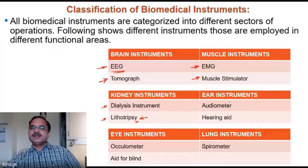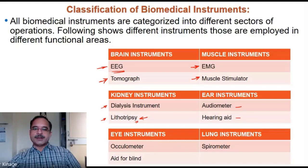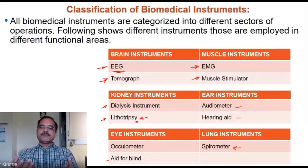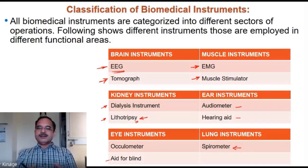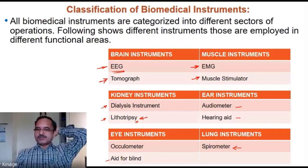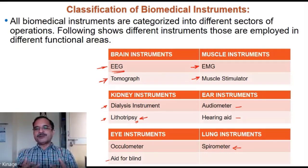Ear instruments include the audiometer and hearing aid. Eye instruments include the oculometer and aids for the blind. For lung instruments, there is the spirometer, which measures the capacity of a person to inhale and exhale air — that is, the volume of air a particular person can inhale or exhale.